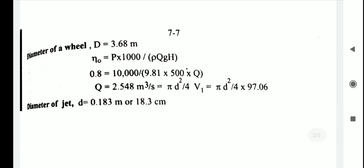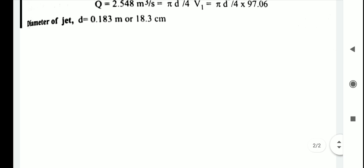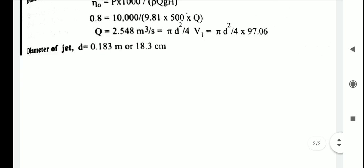The discharge Q also equals (π d² / 4) × V1, where V1 = 97.06 m/s. Setting Q = 2.548 m³/s and solving for the jet diameter d, we get d = 0.183 meters, or 18.3 centimeters. That concludes the second problem.